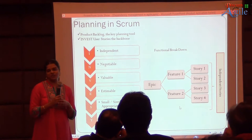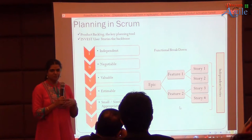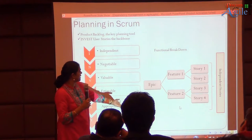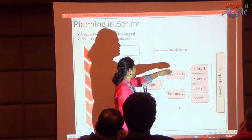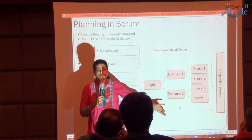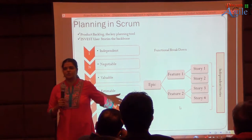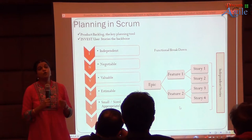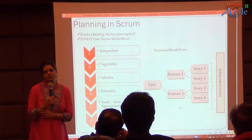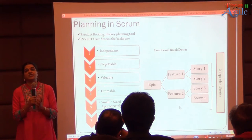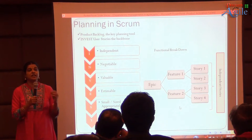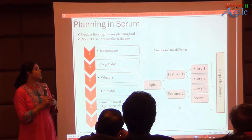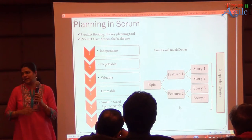But in reality, when you actually go to a product backlog, are the stories really independent? The answer is no. Though we put down a functional breakdown showing different features and stories, they are not really independent. The textbook of Scrum is actually silent on dependencies. So when you go into reality, how do you handle that?